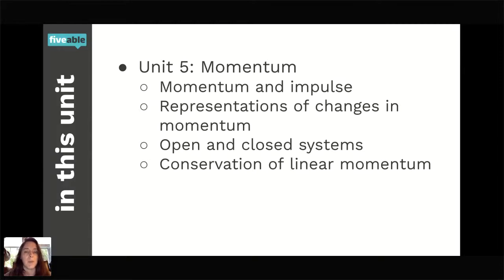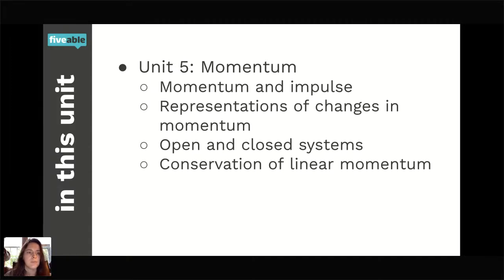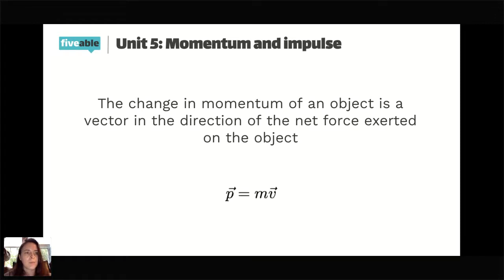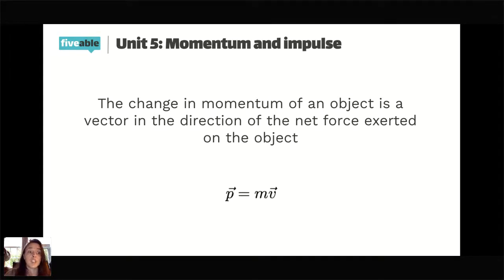To start, Unit 5: Momentum. The topics included are Momentum and Impulse, Representations of Changes in Momentum, Open and Closed Systems with regards to Momentum, and Conservation of Linear Momentum. One of the big things to take away is that the change in Momentum of an object is a vector, and the change in Momentum is in the direction of the net force exerted on the object. From P = mv, your delta P — P final minus P initial — is going to be in the direction of the force changing your momentum. Momentum is a vector, and the outside force acting on the object to change the momentum is in the same direction as the change in Momentum.